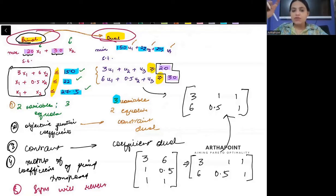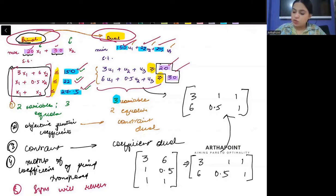What are the things we are learning going from primal to dual? One, the variables become the number of equations, and the number of equations become the variables. Second, the objective function coefficients change into the constraints, and the constraints change into the objective function coefficients. Third, the matrix that you are creating here gets transposed and becomes the matrix there. And at last, you will notice that these signs reverse themselves.